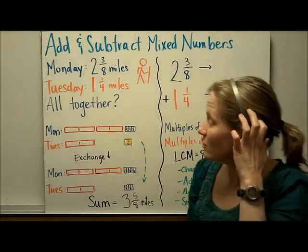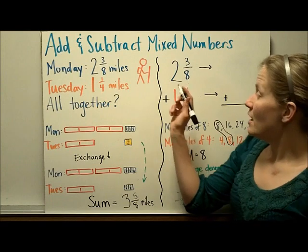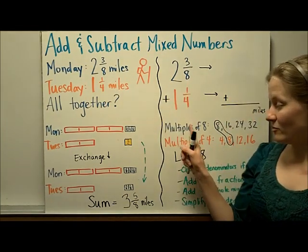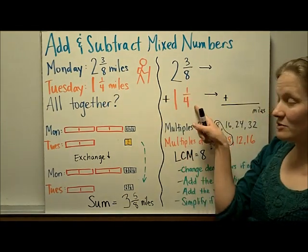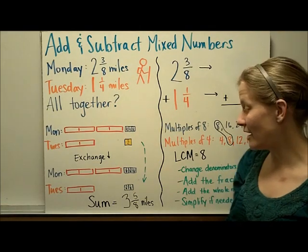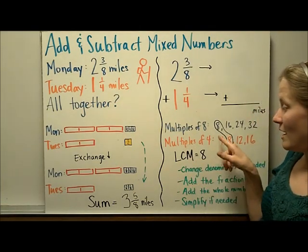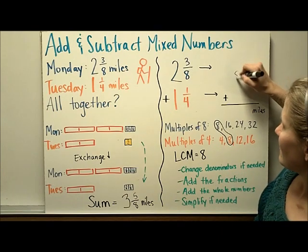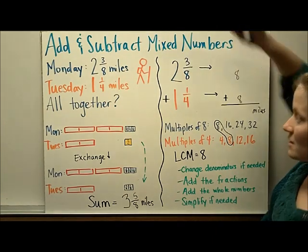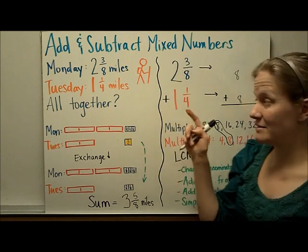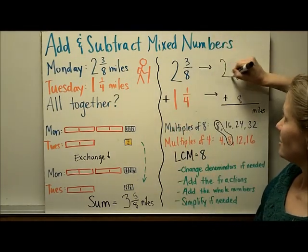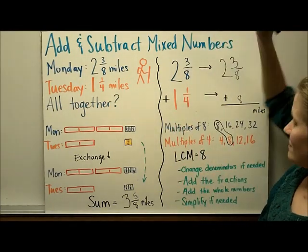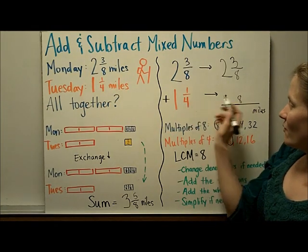Let's show the steps that we did over here. We first found the multiples of 8 and the multiples of 4 because we needed to find our least common multiple, and we've determined that that was 8. So that is going to become the denominator on both of our fractions. Well, this one already has 8 as a denominator, so it doesn't change. And in this one, in order to get from 4 to 8, I multiply it by 2.